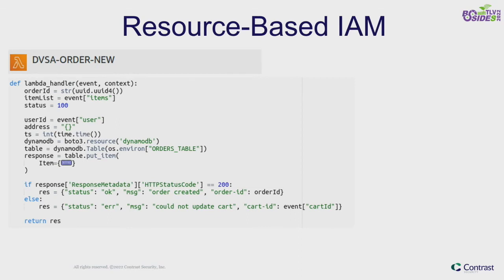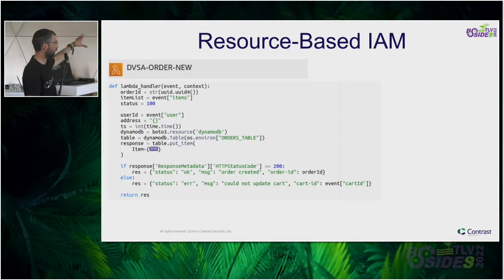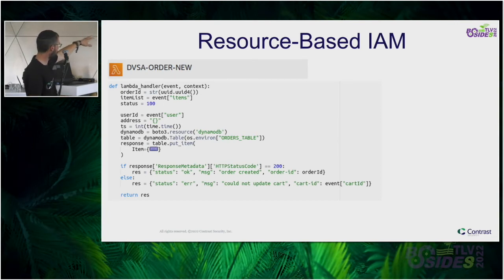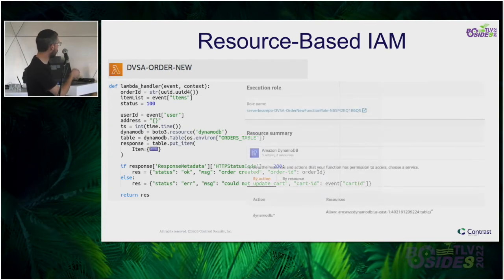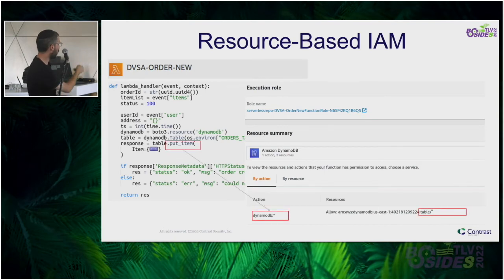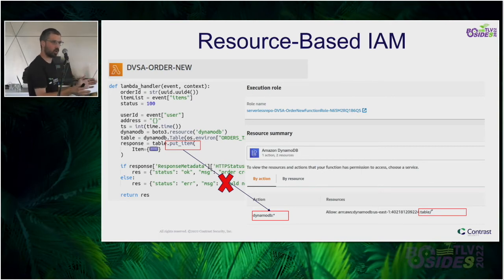Now let's take a look at a small Lambda function code example. This is the code — a small example that takes an event, handles it, and does some access to a DynamoDB database — specifically putting a new item in the database. The developer writes the code and tries to run it. It will not work because the Lambda function doesn't have access to the database, so they need to change the configuration and give the Lambda function access.